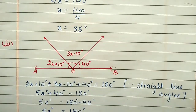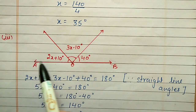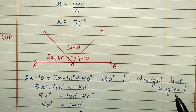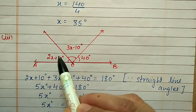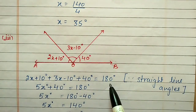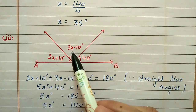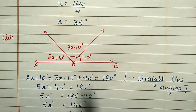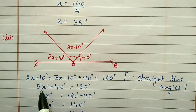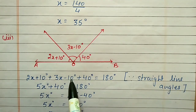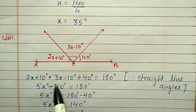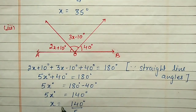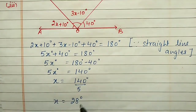Third part: again three angles on a straight line — (2x + 10), (3x − 10), and 40 degrees. Using the straight-line angle property, 2x + 10 + 3x − 10 + 40 = 180. Simplifying: 5x + 40 = 180, so 5x = 140, giving x = 140 ÷ 5 = 28 degrees.